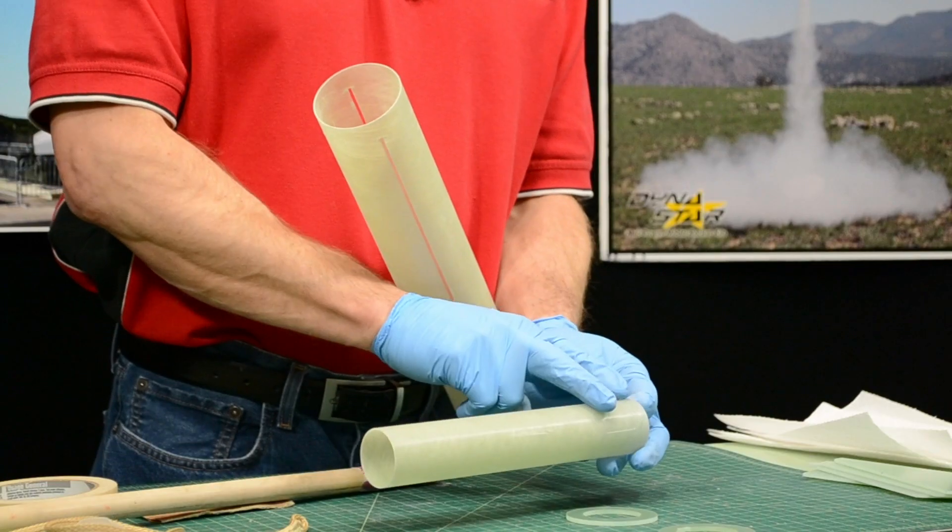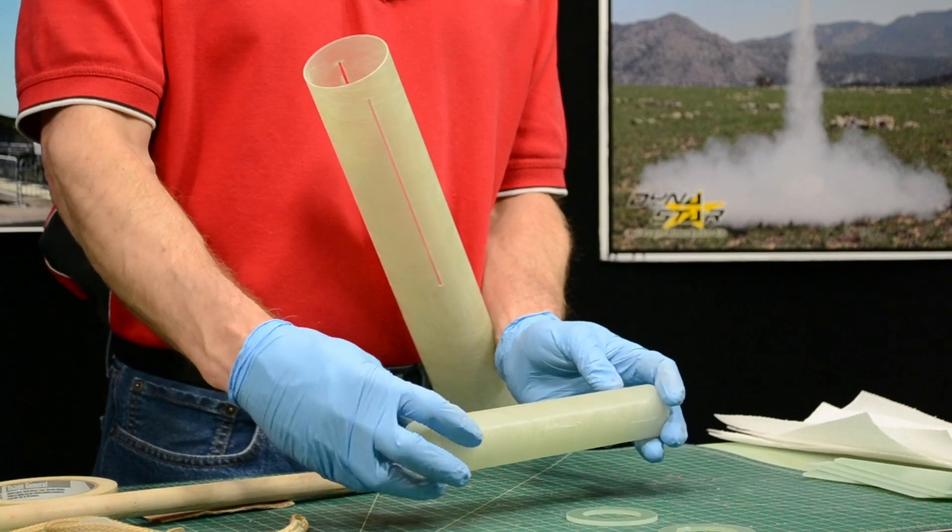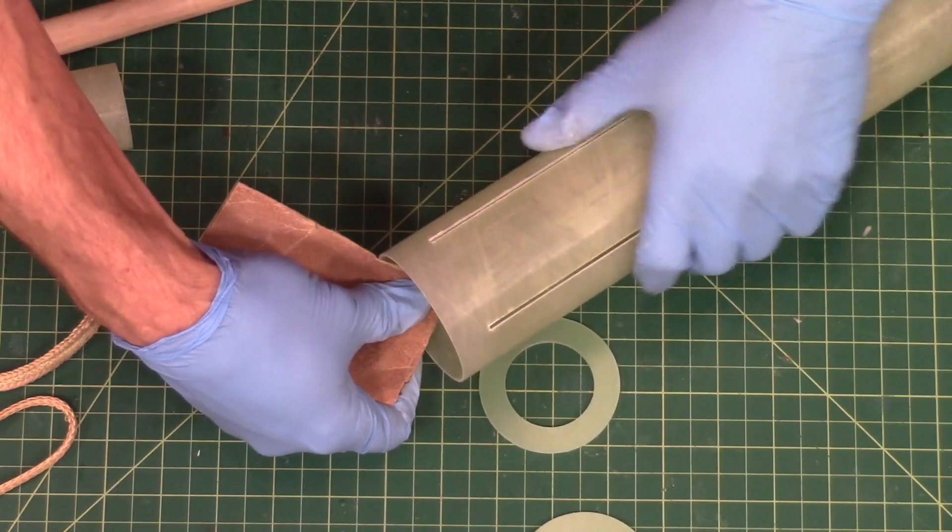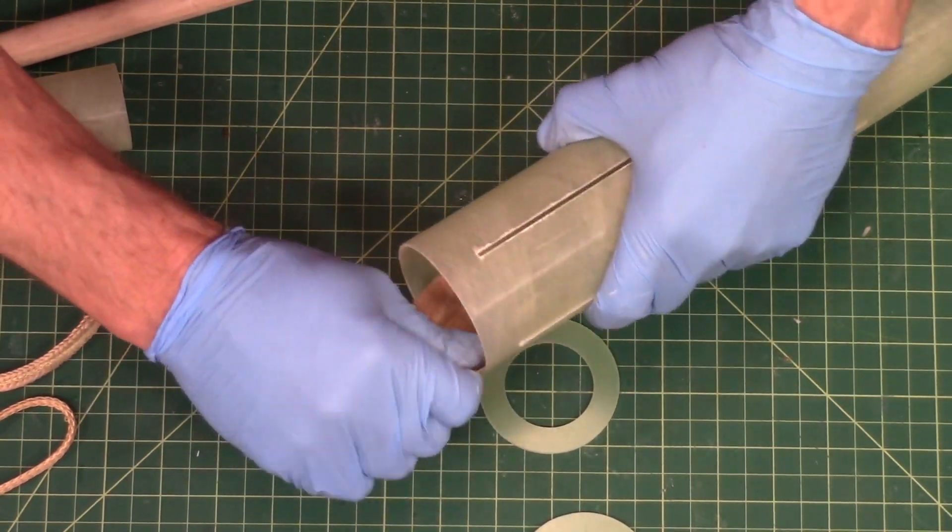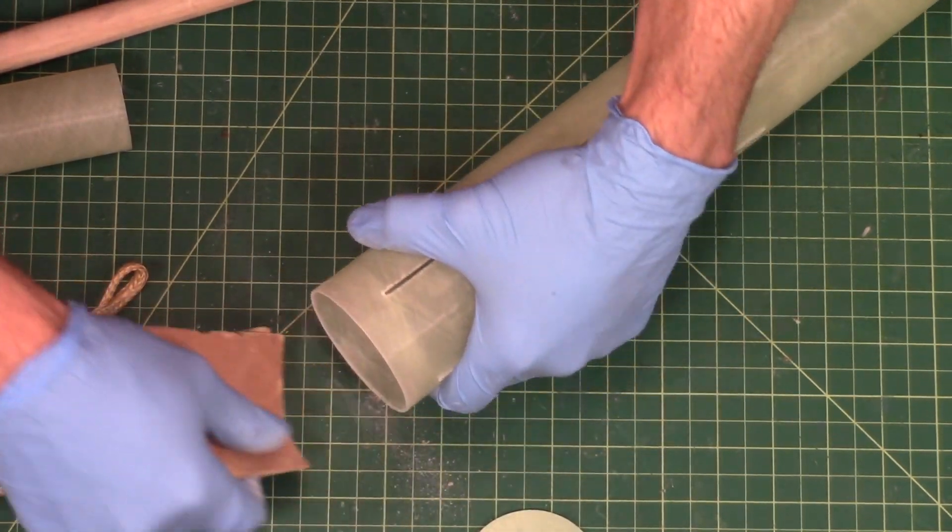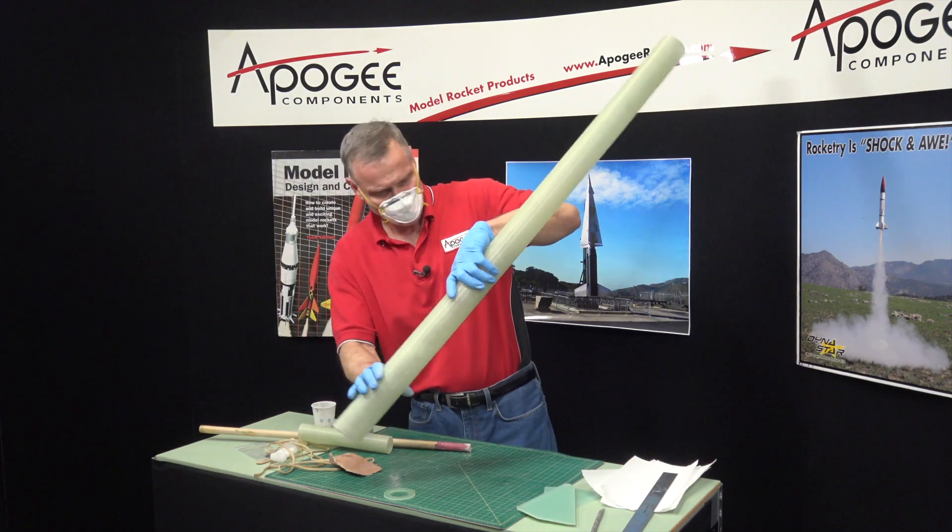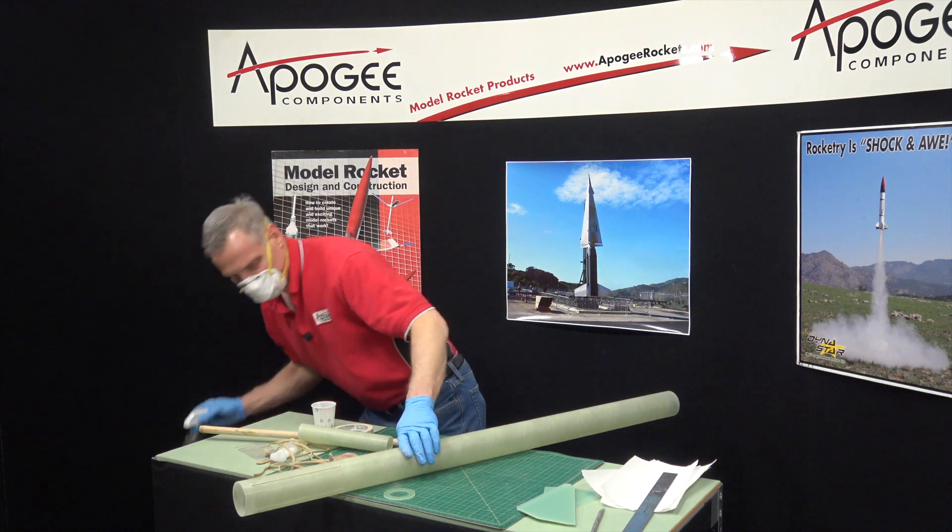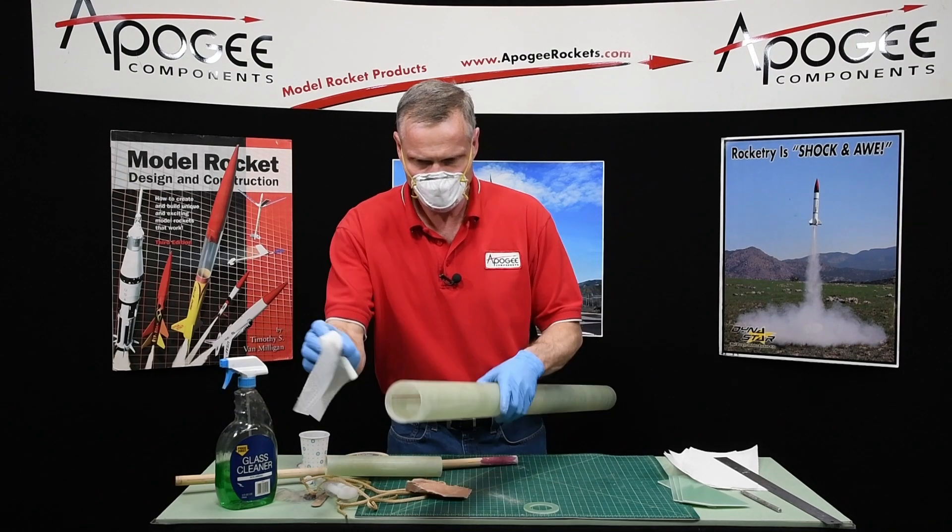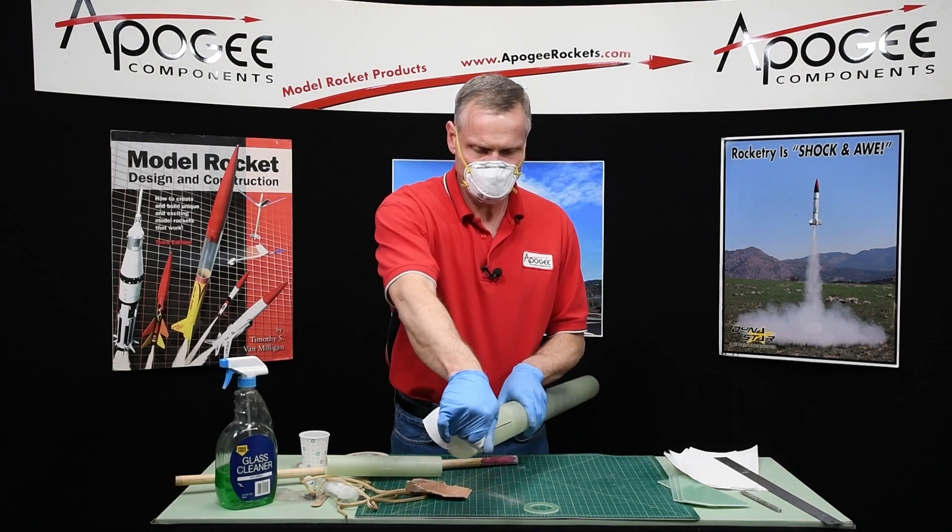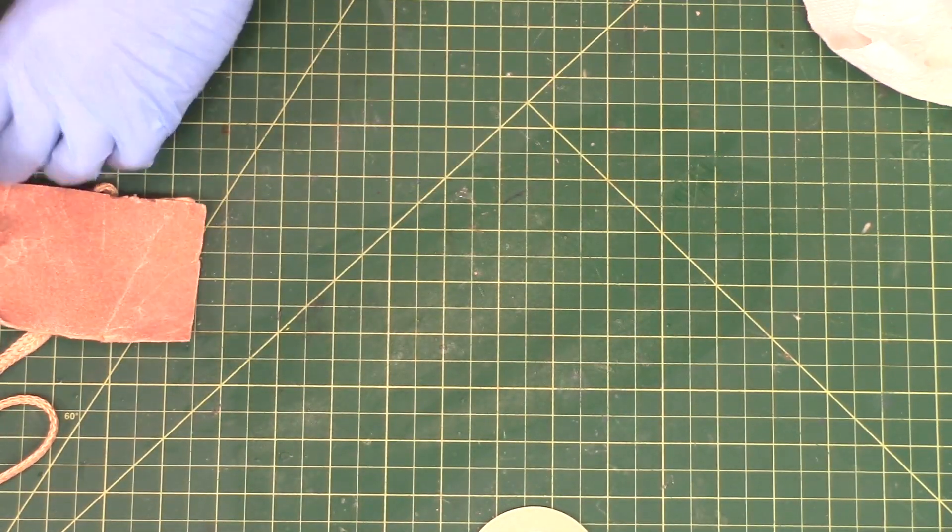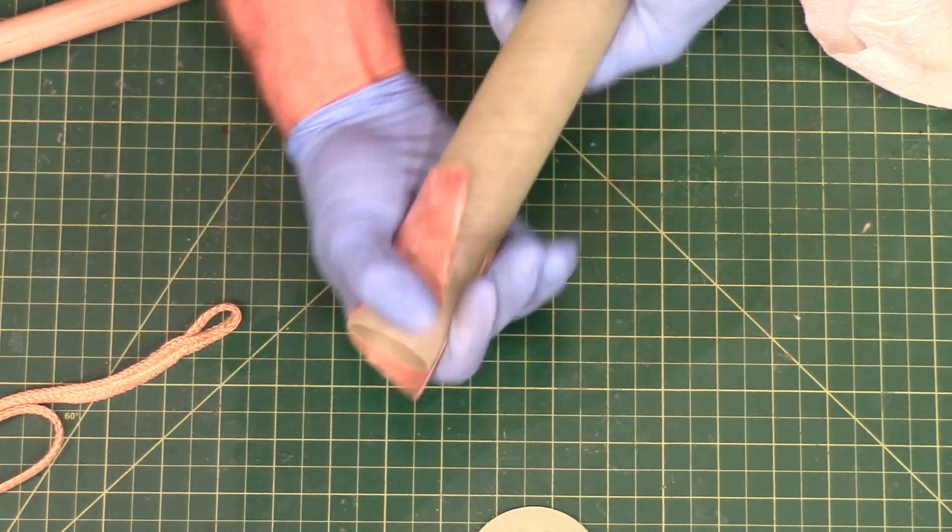And then we're also going to scuff up the back and the front of this tube. This is just some soap and water.